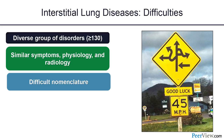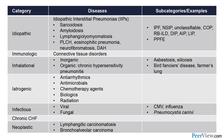Interstitial lung diseases are difficult — a large group of many different disorders with similar symptoms, similar physiology, and radiographs that often overlap. The nomenclature is extremely hard, this alphabet soup of acronyms. So how do we chunk up these hundreds of different disorders? We try to make them into smaller groups.